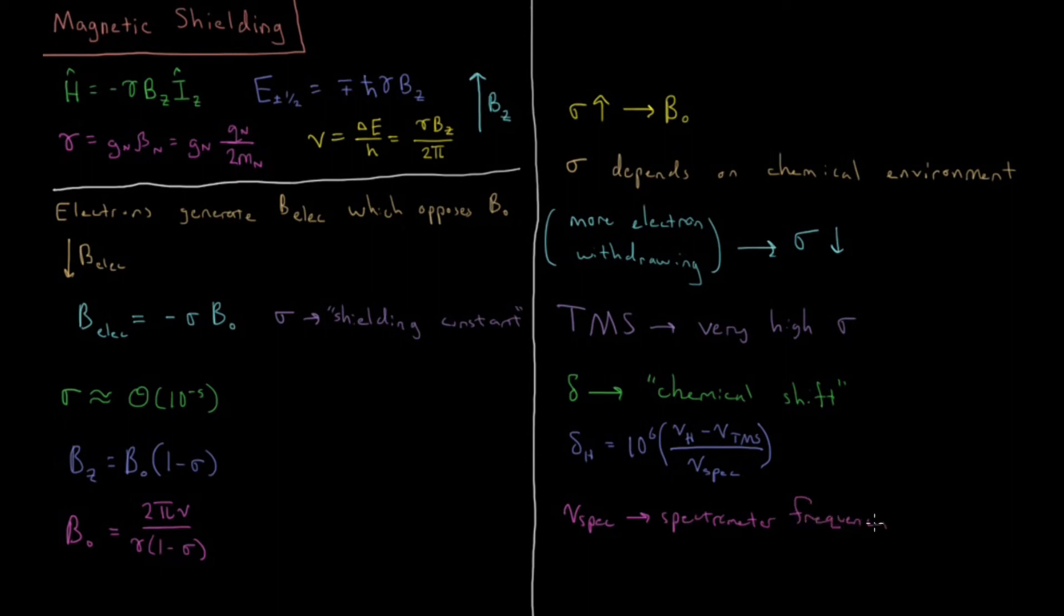When we're calculating chemical shifts, we want to make sure that we take care to put that value in hertz, because this value of delta here, this is actually a unitless value inside of these parentheses, and then when we multiply it times 10 to the sixth, it gets a unit called parts per million, or ppm. Because when you're taking this 10 to the sixth, you are multiplying by a million, getting you parts per million.